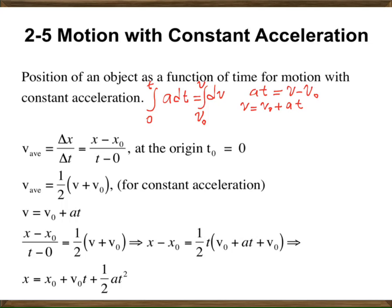This gives velocity, but you want to get an expression for position. Recall that v equals dx over dt. On the right-hand side, v₀ is constant and a is constant, but you have the variable t. Multiply both sides by dt, and on the left-hand side you will have dx, and on the right: v₀·dt plus a·t·dt.